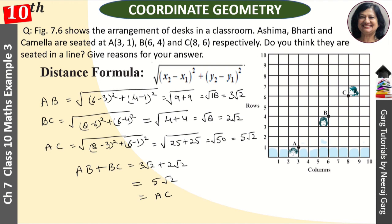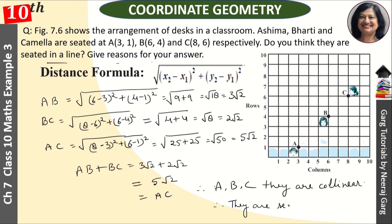Now, AB plus BC equals 3 root 2 plus 2 root 2, which equals 5 root 2, and this is equal to AC. So AB plus BC equals AC. This means that points A, B, C are collinear. Therefore, they are seated in a line. I hope you understand the question correctly. If you are new to my channel, subscribe, like the video and share the video.